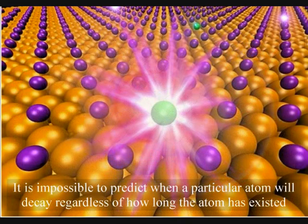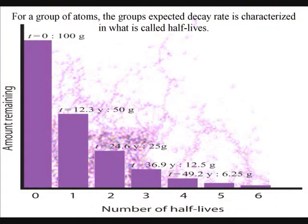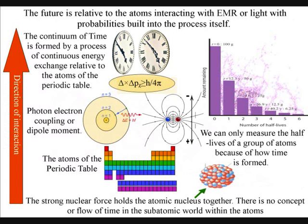It is impossible to predict when a particular atom will decay, regardless of how long the atom has existed. However, for a group of atoms, the expected decay rate is characterized in what is called half-lives. The half-life represents a time after which half of the group's nuclei will have decayed. Mainstream physics has no objective or logical understanding of why we should have such a property as half-life. But if time and the future itself is relative to the atoms interacting with electromagnetic radiation or light, it would be logical that probabilities are built into the process itself.